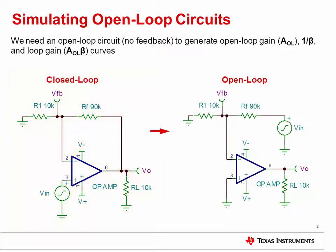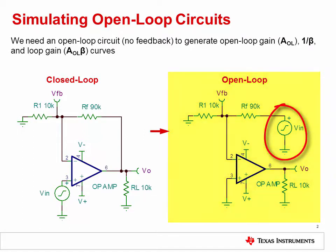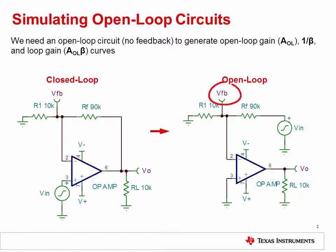To generate these curves, the feedback loop of the amplifier needs to be opened up or broken. Then, a small signal source is used to excite the high impedance side of where the loop was broken. Measurements can then be taken at the op-amp inverting input, VFB, and output, VO, which will be used to derive the desired curves.